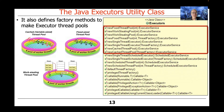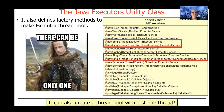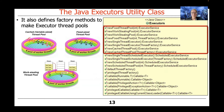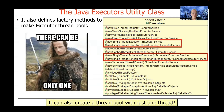The Java Executors utility class also defines various factory methods to make executor thread pools. There are probably about 10 to a dozen of these methods — I just show a few of them here. You can also create a thread pool with just one thread. Thread pools like fixed thread pool, work stealing pool, and cache thread pool can create multiple threads, but there are also single-thread variants useful primarily for debugging.